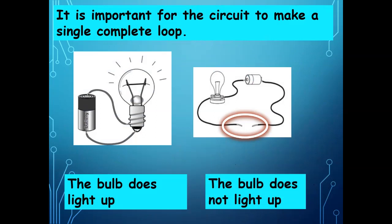It is important for the circuit to make a single complete loop. If the circuit is broken, the loop is not complete. In the first picture, the circuit is complete — you can see the wire is joining both sides of the cell, so the bulb lights up. In the second picture, the circuit is broken and the wire is broken, so the bulb does not light up.